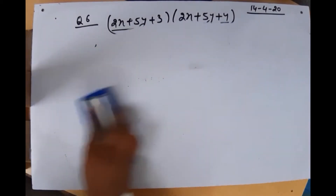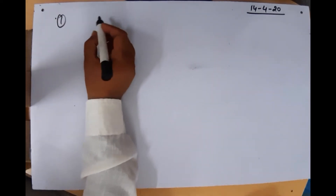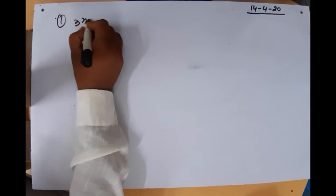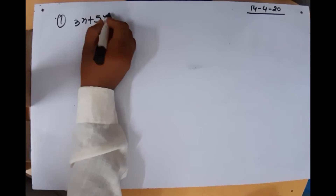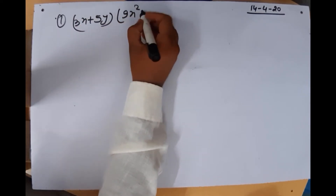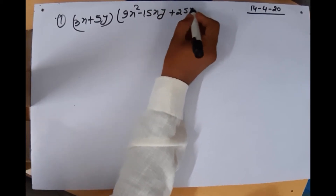Now moving on to question number 7: (3x + 5y) multiplied by (9x² − 15xy + 25y²).